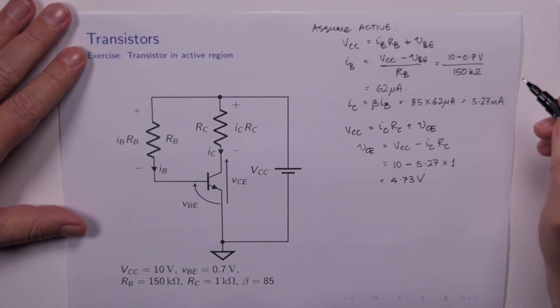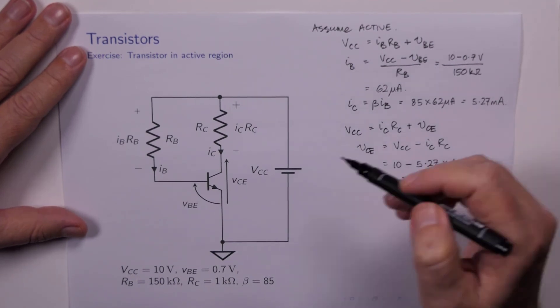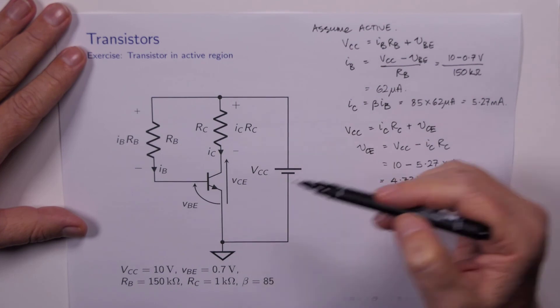And that works out to be 4.73 volts. All right, how do we feel about this? Well, collector current, 5.27 milliamps down there. That looks okay.